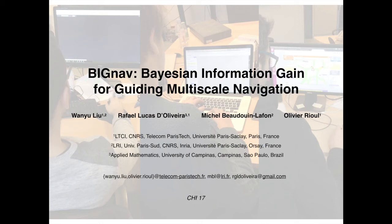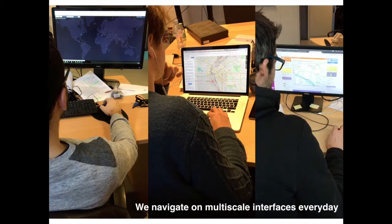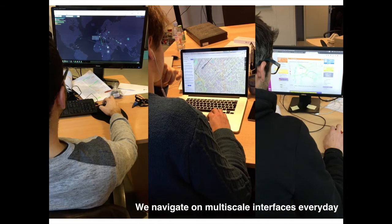Big Nav: Bayesian Information Gain for Guiding Multiscale Navigation. Multiscale interfaces offer a powerful way to represent and navigate large datasets, such as maps and deep hierarchies.